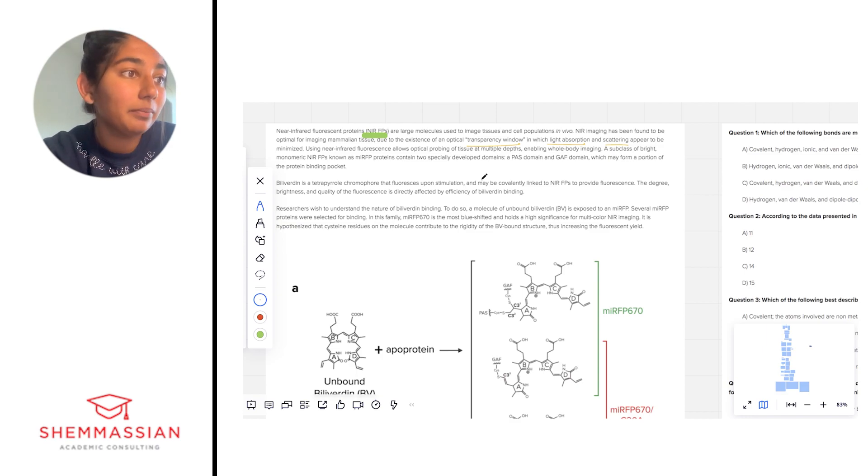Using near infrared fluorescence allows optical probing of tissue at multiple depths enabling whole body imaging. A subclass of bright monomeric NIRFPs known as MIRFPs contain two specially developed domains: a PAS domain and a GAF domain which may form a portion of the protein binding pocket. They have particular domains, we might be asked about the chemical structure of that later, and they're part of the protein binding pocket. I'm starting to think about why certain things might be binding to a protein binding pocket—there might be certain characteristics that make it more favorable for particular types of molecules to bind versus others.